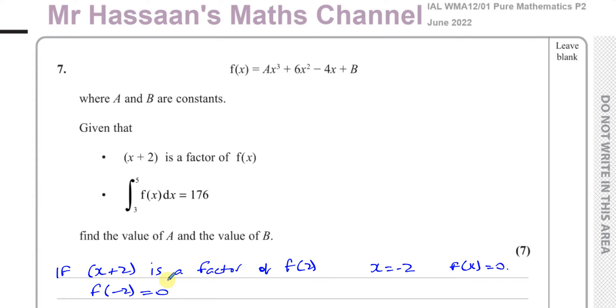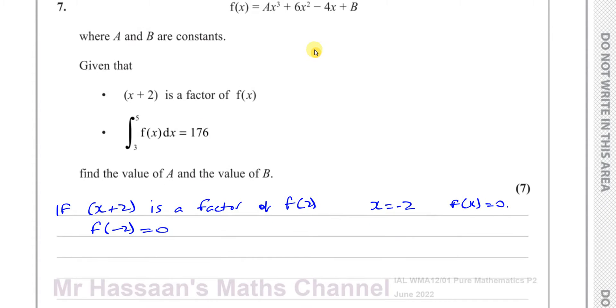So if we substitute whatever makes this 0 into this function, it's going to make the value of the function 0. If f(-2) is equal to 0, we're going to have a times (-2)³ plus 6 times (-2)² minus 4 times (-2) plus b equals 0. So that's going to give you -8a plus 6 times 4 is 24 because (-2)² is positive 4, and -4 times -2 is positive 8 plus b equals 0.